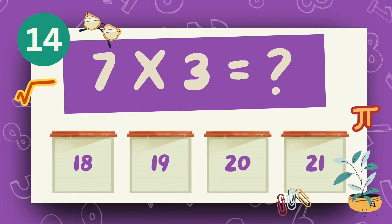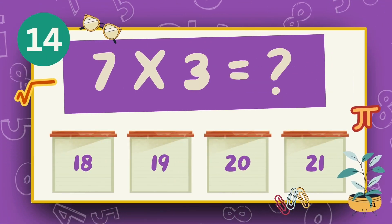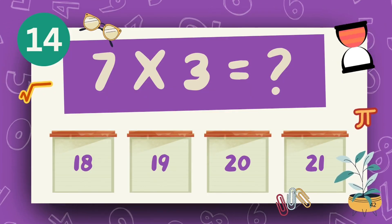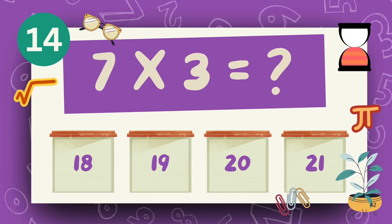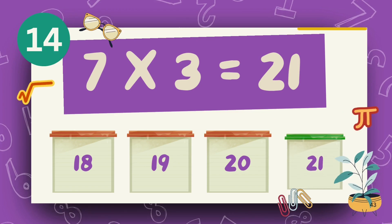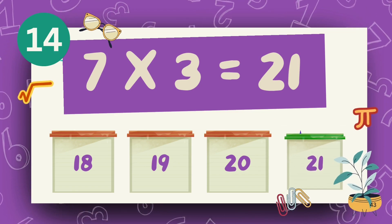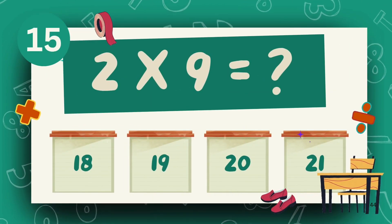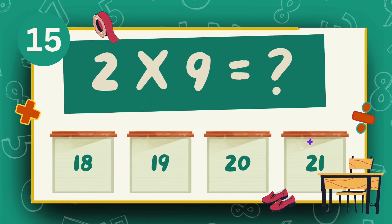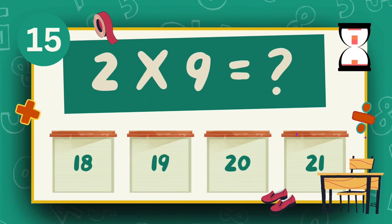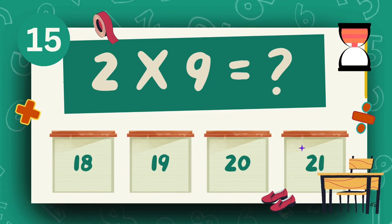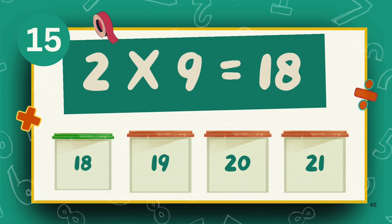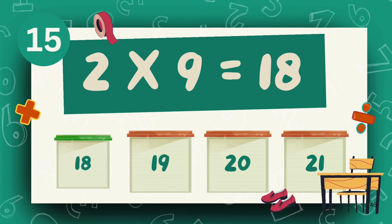What is 7 multiply 3? The answer is 21. What is 2 multiply 9? The answer is 18.